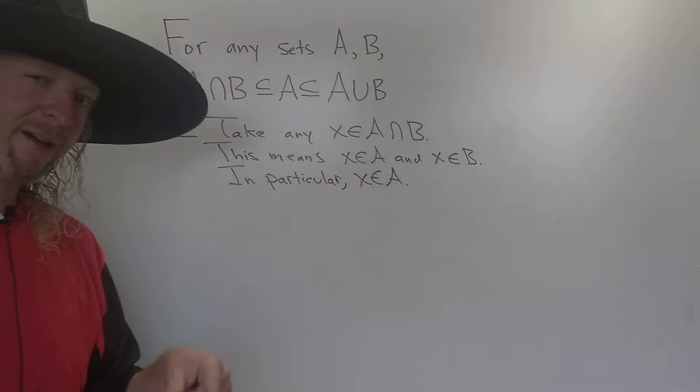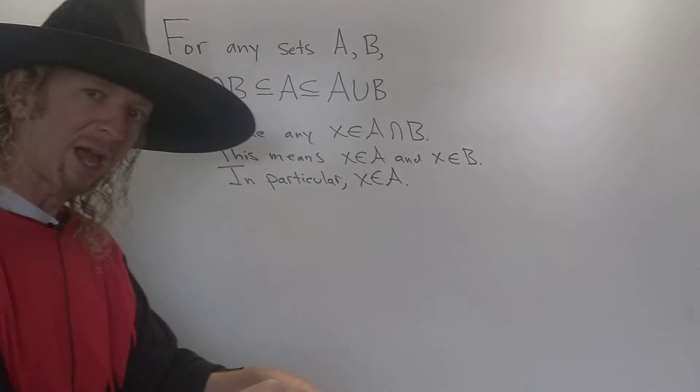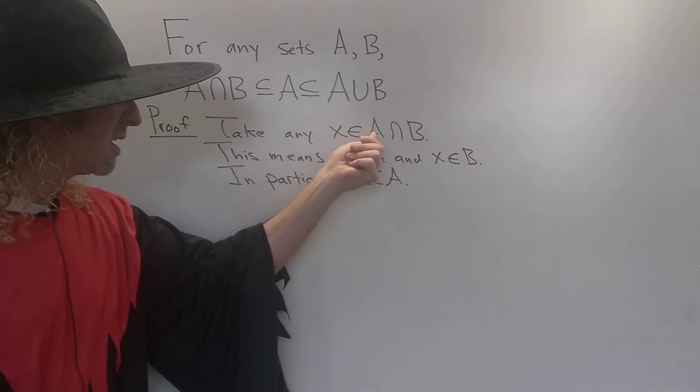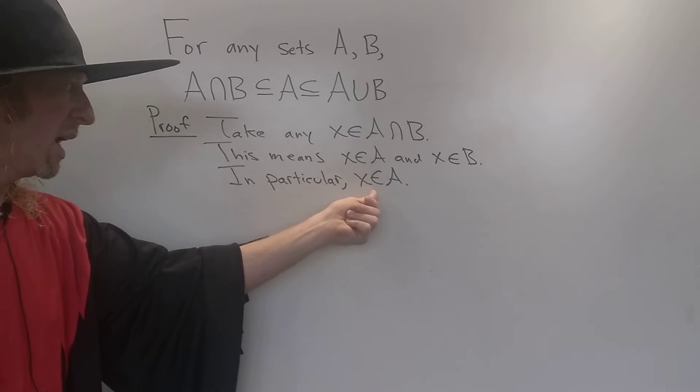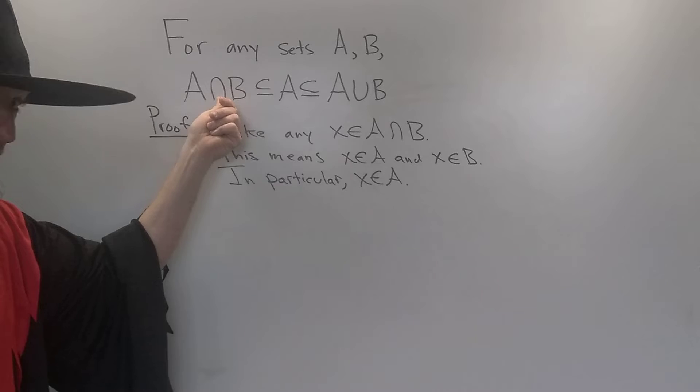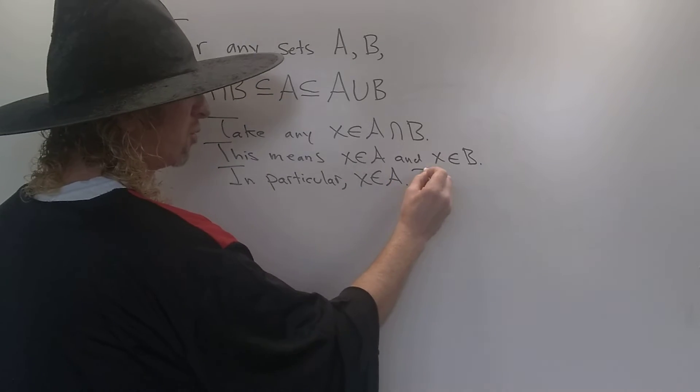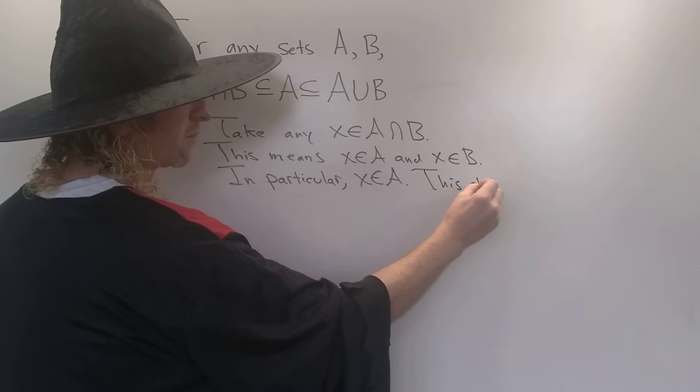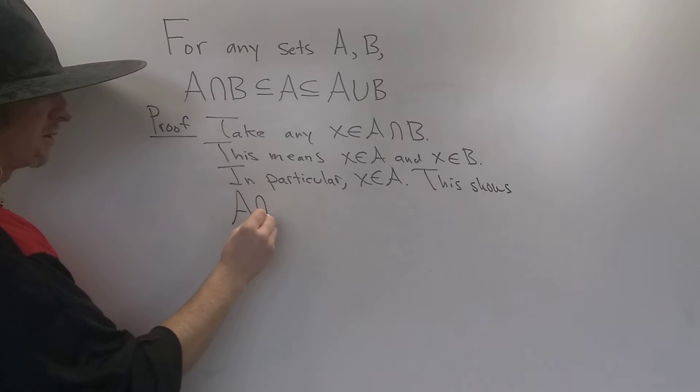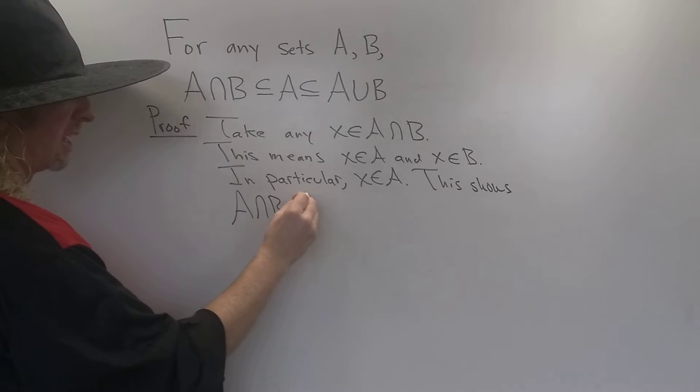Right, to isolate, but that's the fact that we want to emphasize. So we took an X in the intersection, we showed it's in A, therefore, the intersection is contained in A. So this shows that A intersection B is contained in A.